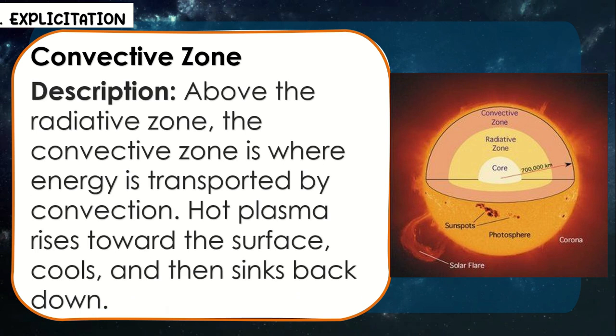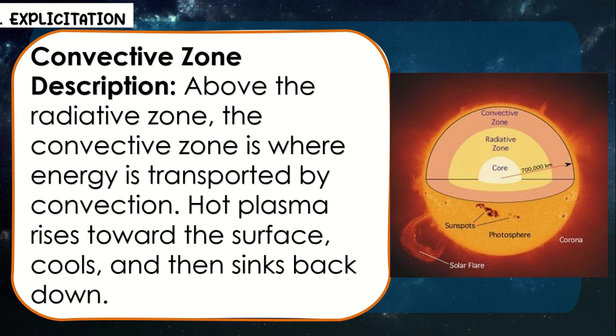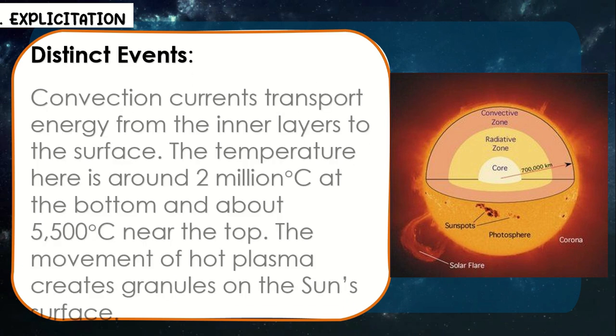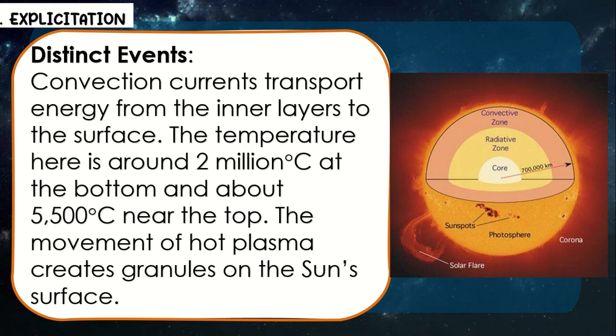Next is the convection zone. Above the radiative zone, the convective zone is where energy is transported by convection. Hot plasma rises toward the surface, cools, and then sinks back down. Convection currents transport energy from the inner layers to the surface. The temperature here is around 2 million degrees Celsius at the bottom and about 5,500 degrees Celsius near the top. The movement of hot plasma creates granules on the sun's surface.